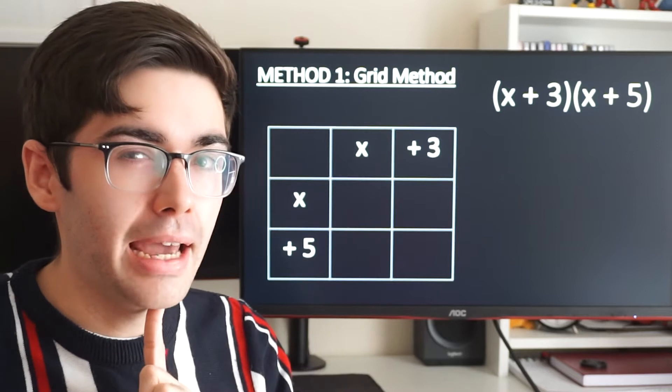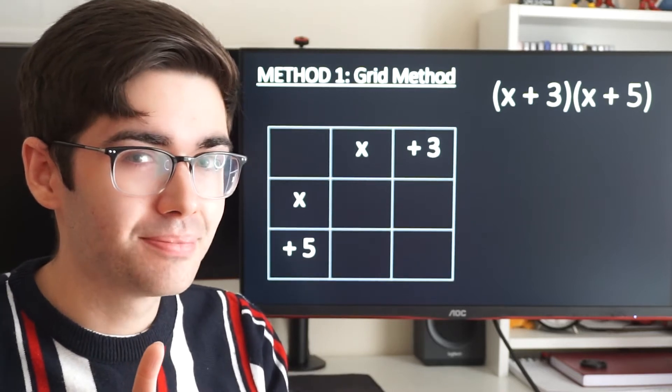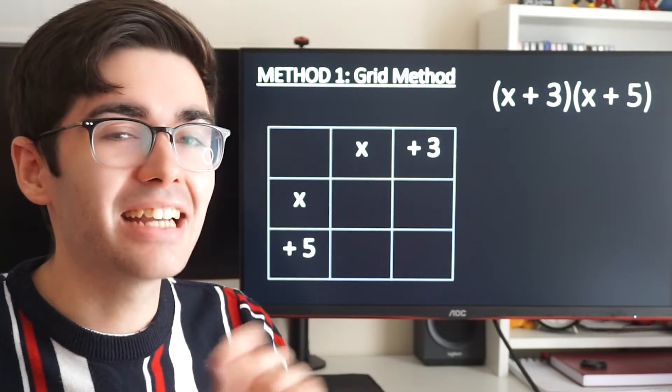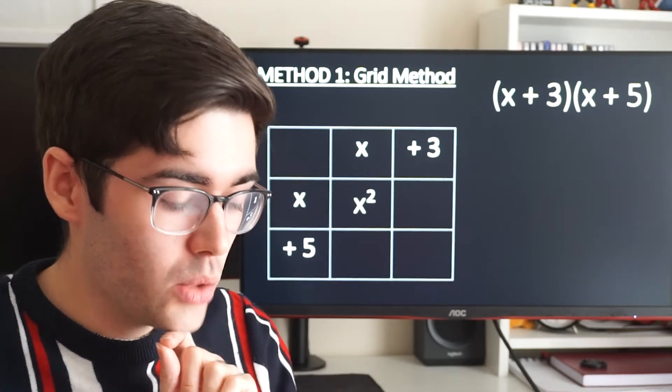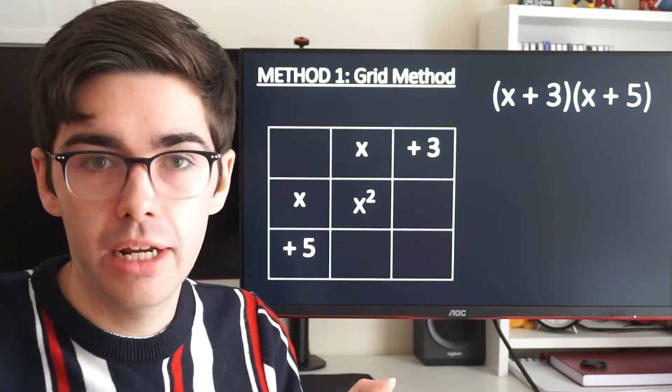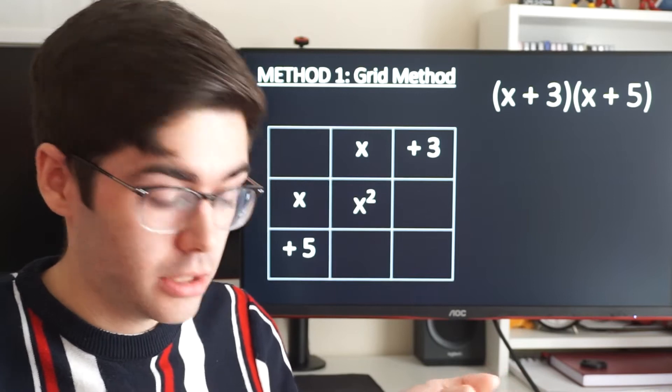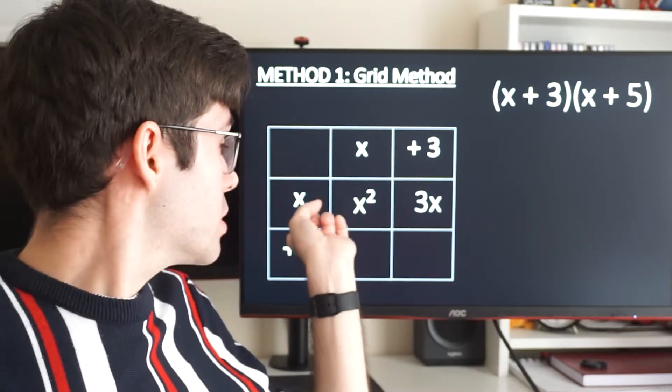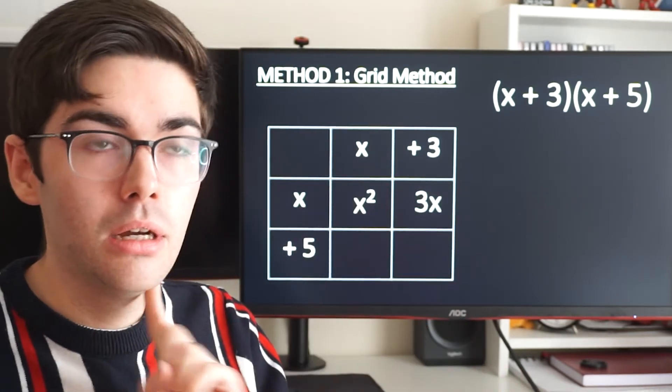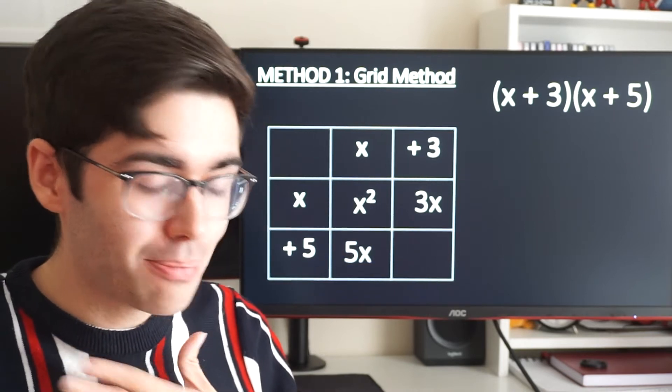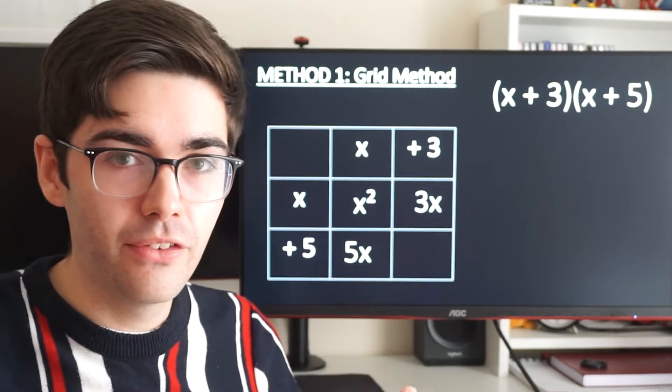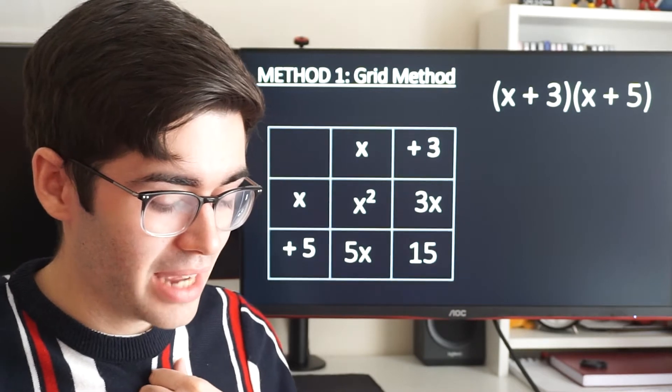What is x times x? Have a think, be very careful. It's not 2x, it's x squared. What is x times positive 3? It's just 3x. Similar idea, what's positive 5 times x? It's just 5x. What is positive 3 times positive 5? It is positive 15.